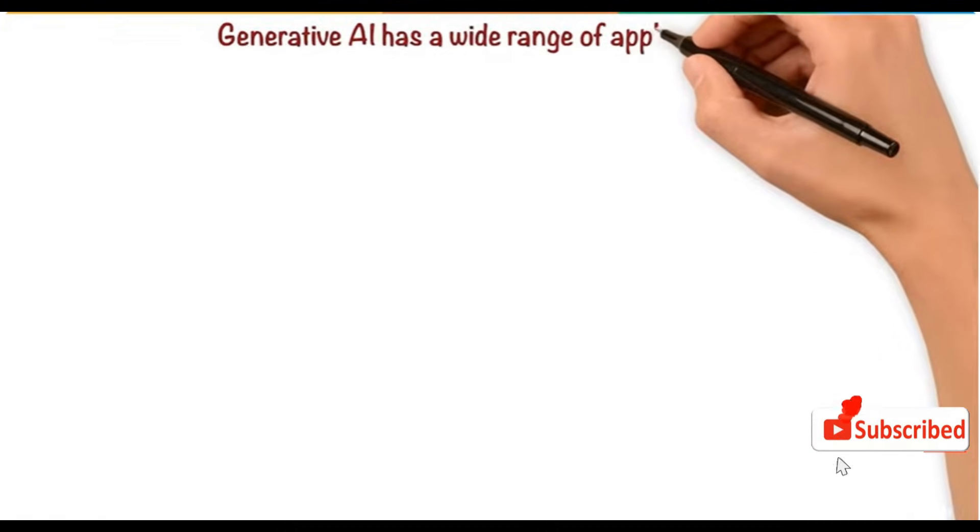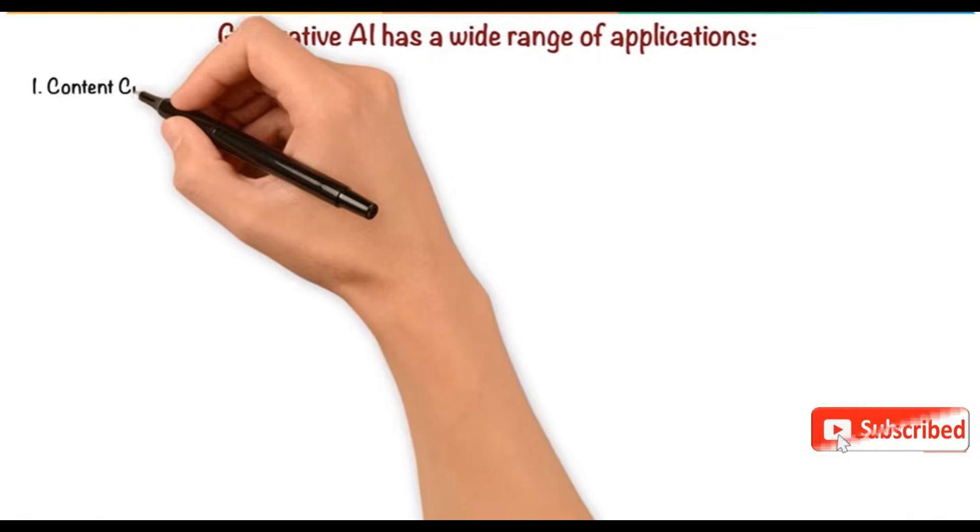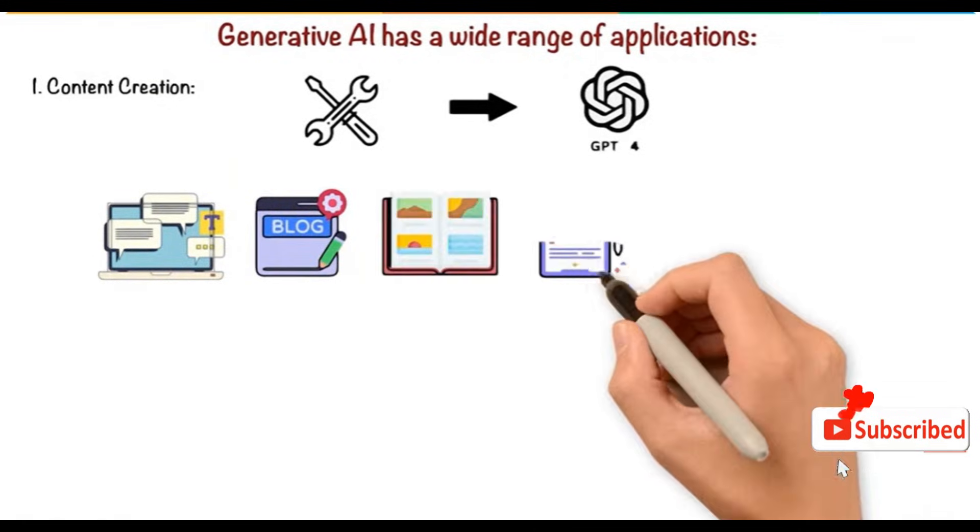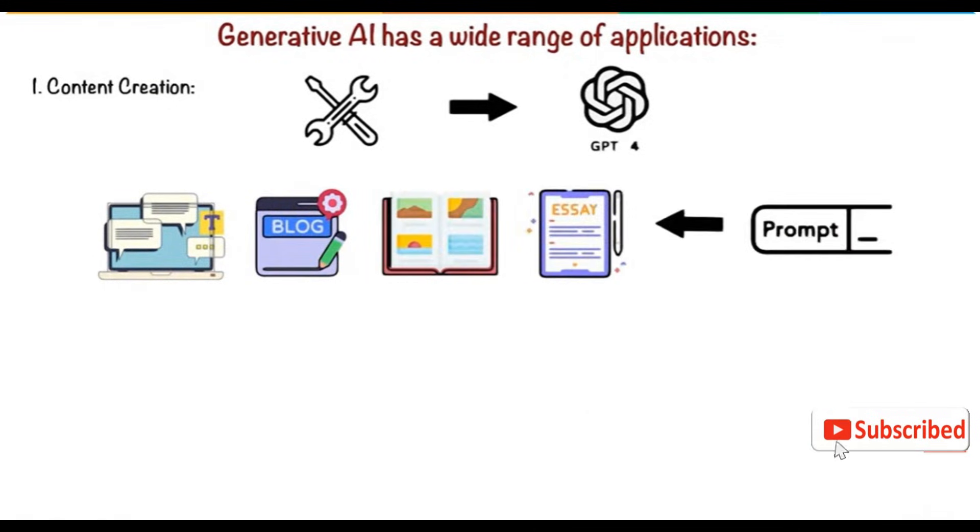Generative AI has a wide range of applications, like content creation. Tools like GPT-4 generate text, blog posts, stories, and essays from simple prompts.